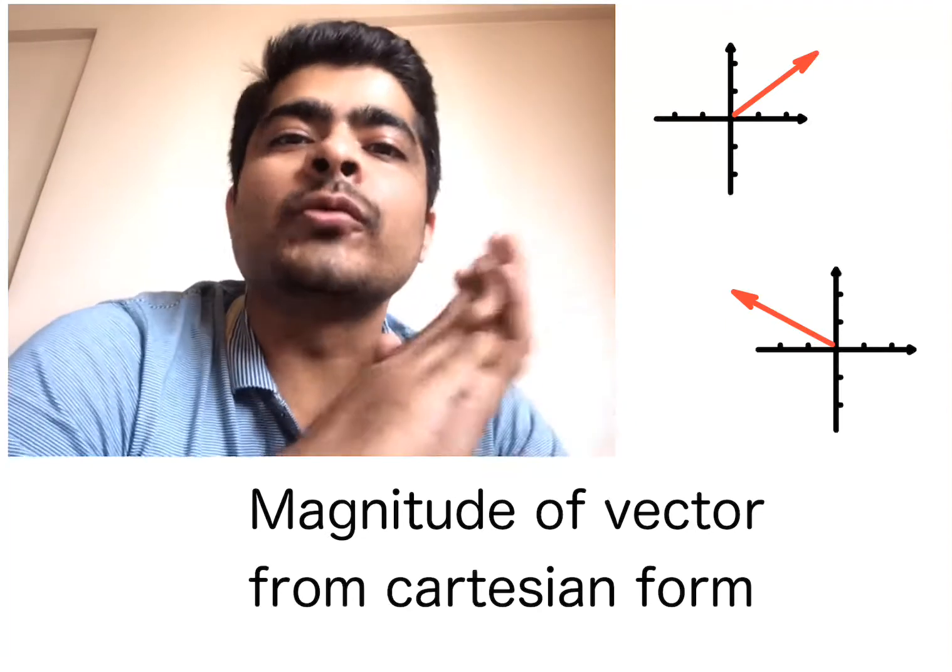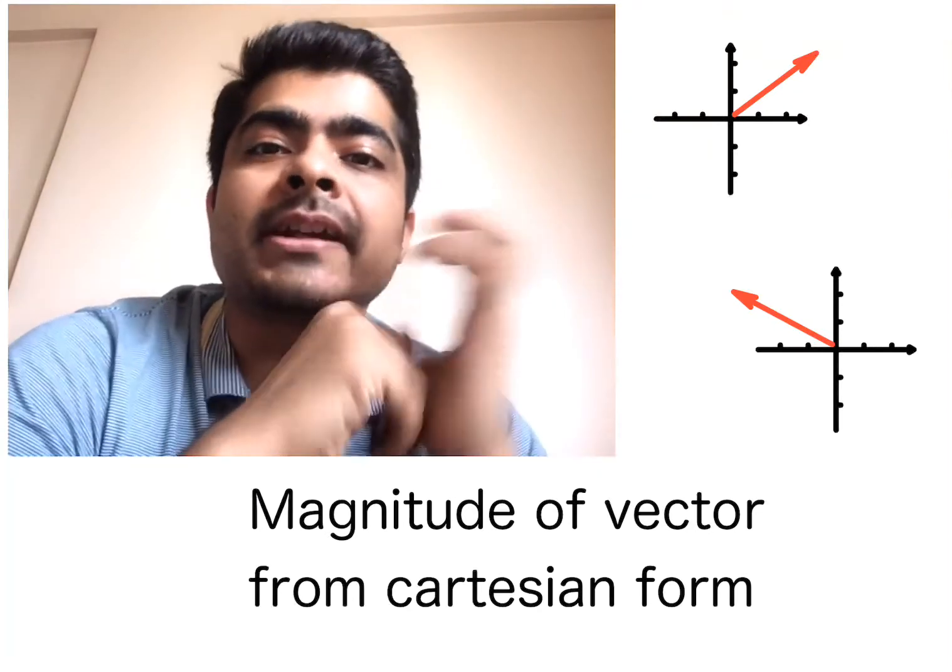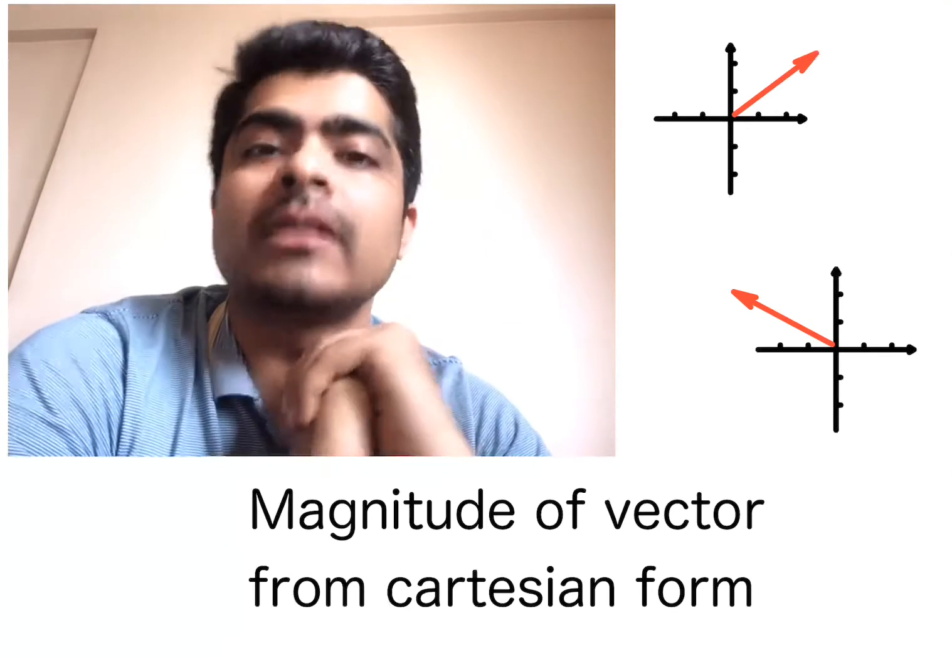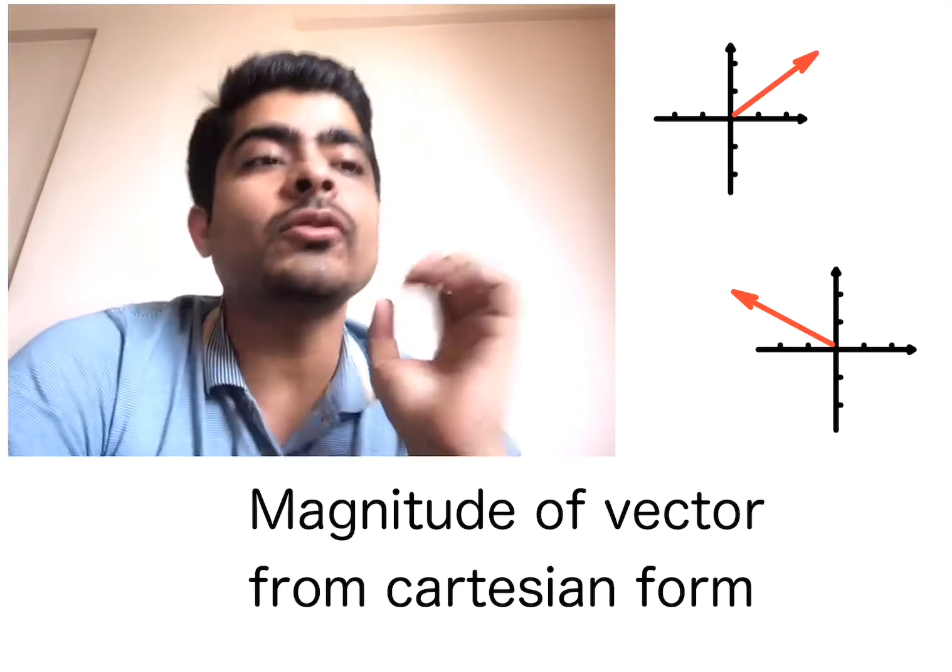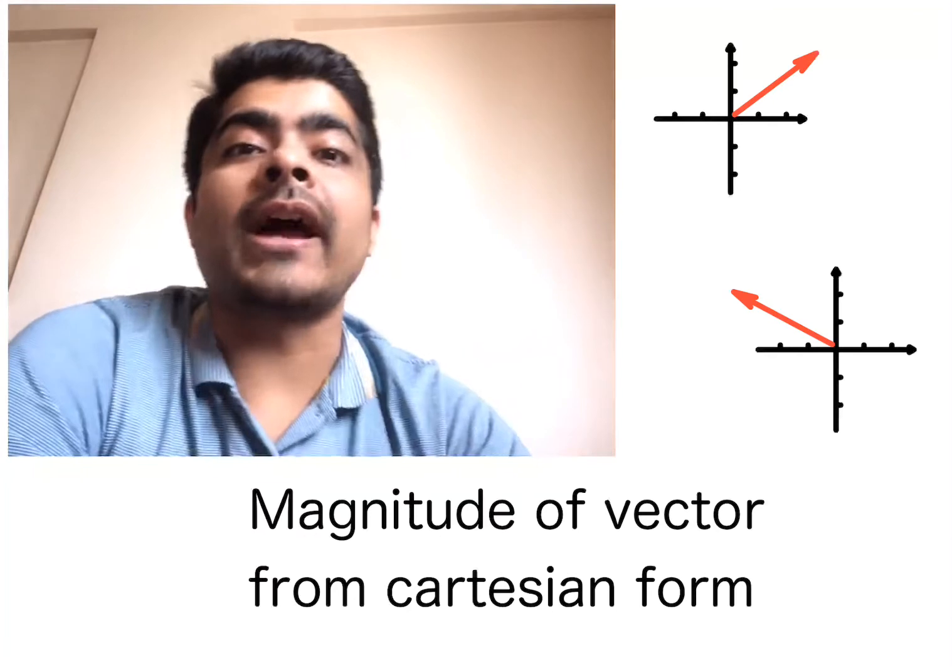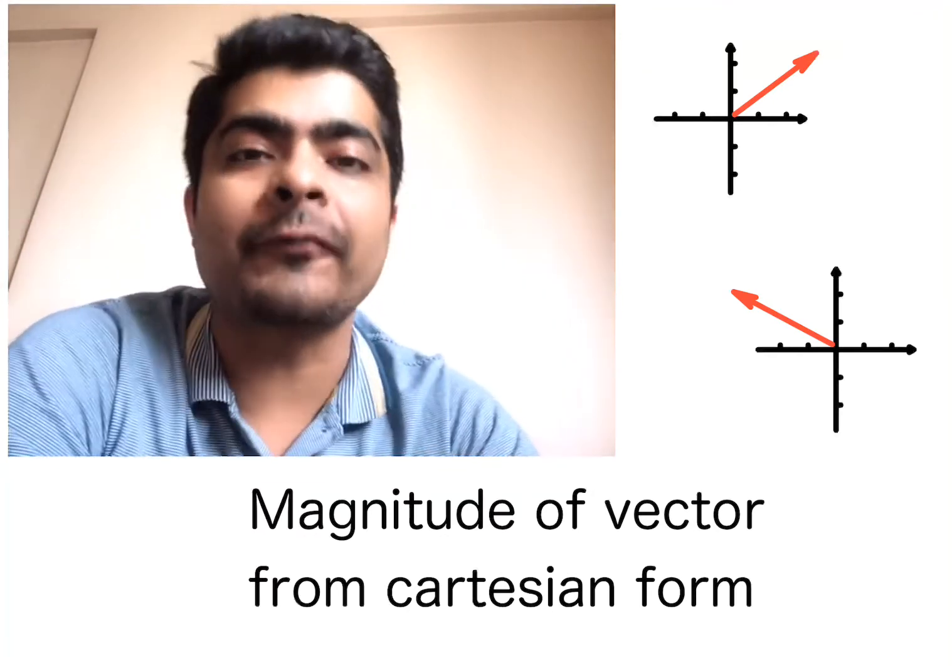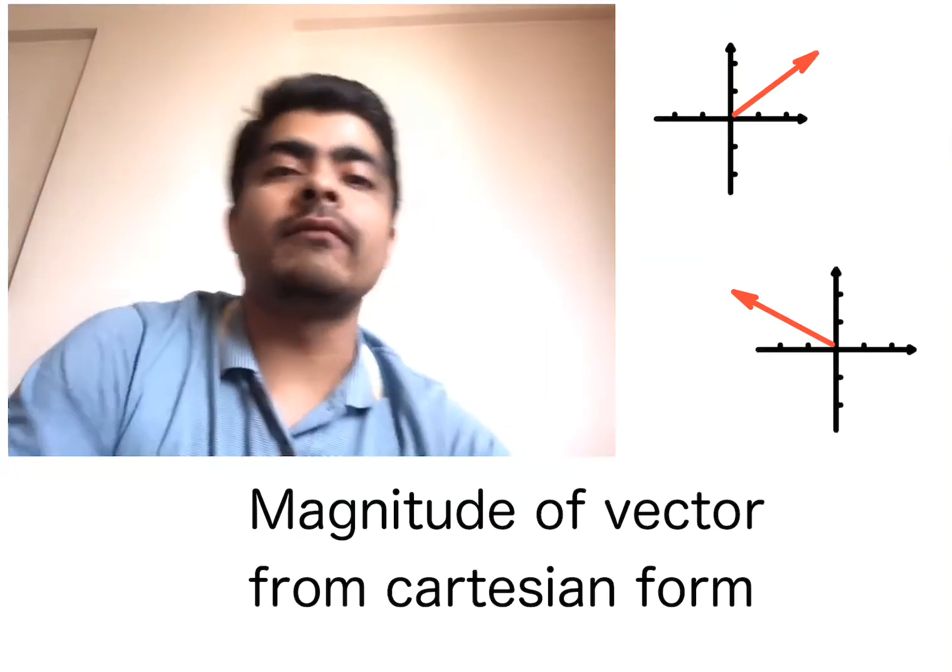All right, so you now understood how a vector can be represented using Cartesian components in 2D. Now we will learn how to find the magnitude of a vector if we know the vector in Cartesian form.